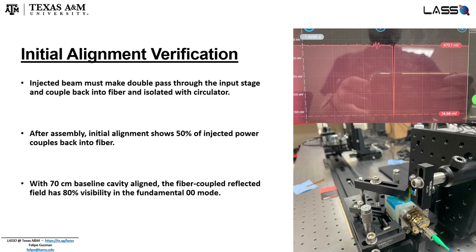For all three of the prototype stages that were built, we showed that we could align the system such that 50% of the injected power reflected and came back into the fiber. Of this 50% of the light that we could detect on our photodiode, we were able to achieve 80% visibility when we aligned a 70-centimeter cavity baseline and swept the laser frequency across the fundamental cavity mode.